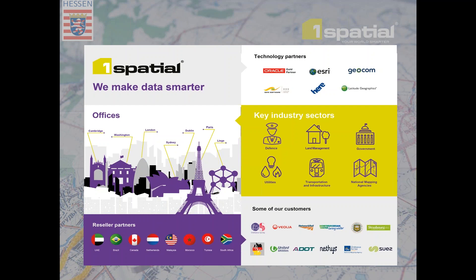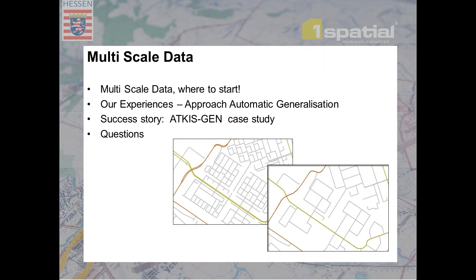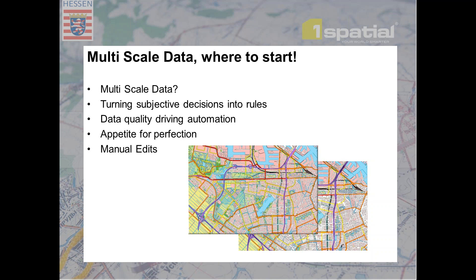The reason we want to showcase our approach to auto-gen today is because it embodies everything One Spatial does within these architectures — driving automation and leading on data quality and data fix-up. Today we'll walk through where to start when looking at multi-scale data, then cover the One Spatial approach to automatic generalization based on experiences with clients such as ATKiS Gen, OS, and IGN France. Then Barbara will take you through what ATKiS Gen has achieved.